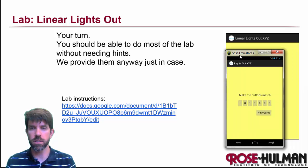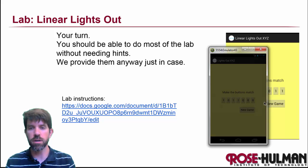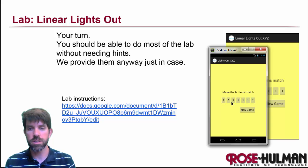So what is it? Let me pull this up in the emulator here. When I run the game I see that it randomizes the zeros and ones on the buttons. The goal is to get them all to match. If I press them you'll notice that they toggle.